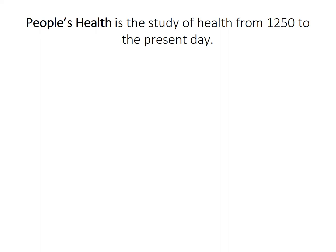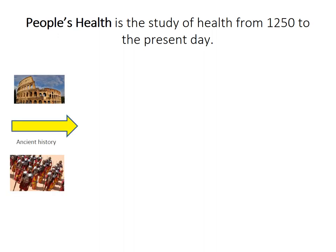Let's start with this series of videos which are going to look at people's health. The People's Health Unit is a study of health from the year 1250 to the present day. It's important that we see this as a chronology, as a timeline, because people's health looks at four main periods of time. It actually doesn't look at ancient history, but I wanted to put ancient history in this timeline.